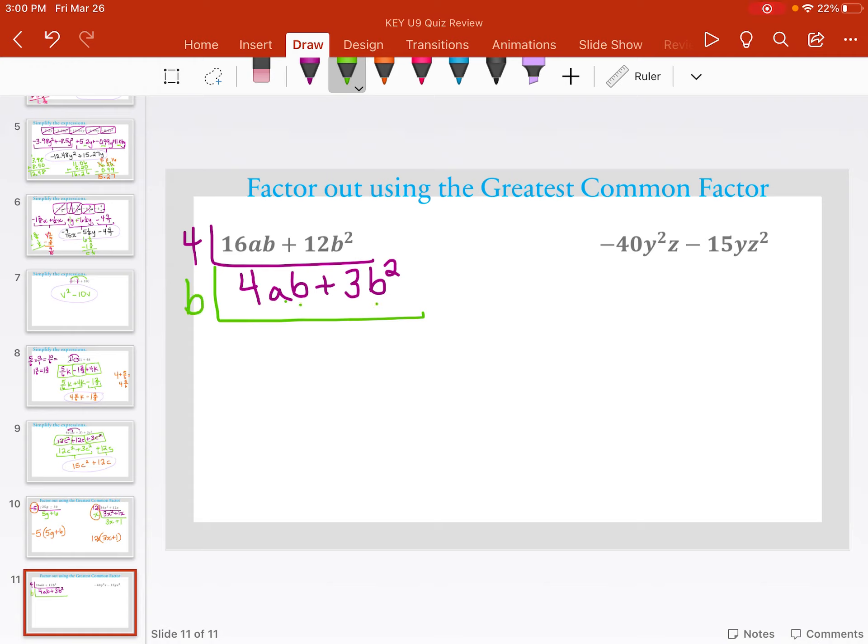When I take the b out of here, that goes away. Now we have 4a left over. Plus, when I take the b out of here, it's b squared. There's two of them. So there's going to be 1b left over. Look again. There's nothing else these two have in common. So that's what goes inside.